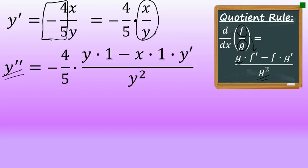Applying the quotient rule, our numerator is x and the denominator is y. The denominator times the derivative of the numerator is y — the original denominator unchanged — times the derivative of x, which is 1, minus the original numerator x, times the derivative of the denominator y. The derivative of y is 1, but just like the first derivative, any time you take the derivative of y you must include a factor of y prime, all over the original denominator squared, which is y squared.